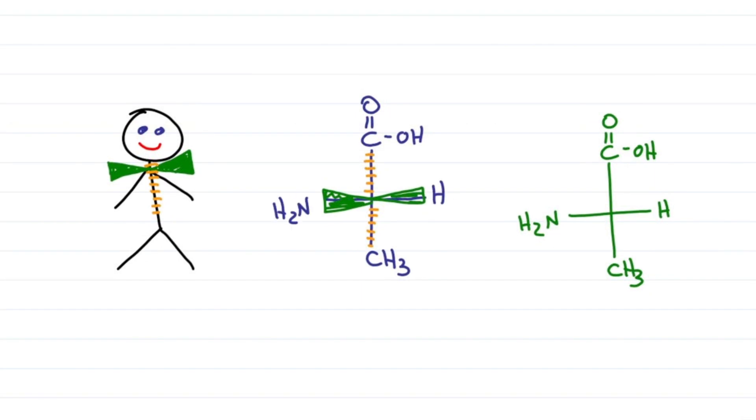That means for a molecule like L-alanine, what we're really looking at is the carboxy and methyl group on dashes down and into the page, and the amine and hydrogen on wedges coming out of the page.